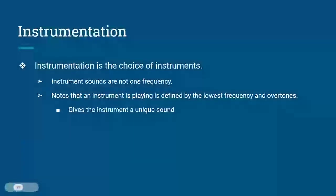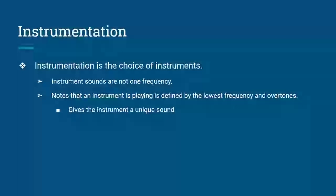Instrumentation is the choice of instruments — it's pretty self-explanatory. The reason this is important is because instruments and sounds are not only one frequency. The notes that an instrument plays are defined by the fundamental, the lowest frequency, and overtones, which are extra frequencies that give the instrument its unique sound. Instrumentation is often subjective and dependent on the genre you'd like to compose, but keep in mind that you can do pretty much anything you want.